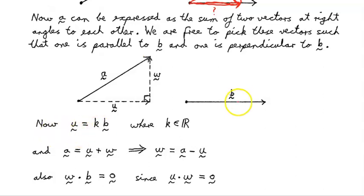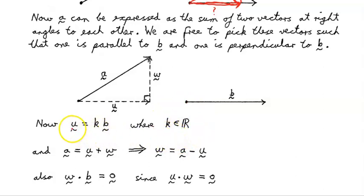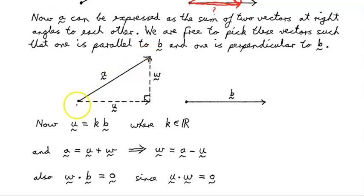Now, if U is parallel to B, then U is some constant K times B, where K belongs to the real numbers. K could be less than one so that U is shorter than B, or greater than one so that U is longer than B. U is pointing in the same direction as B, so K won't be negative in this case. We also know that the vector A is made up of U plus W, so we can rearrange and write W by itself: W equals A minus U.